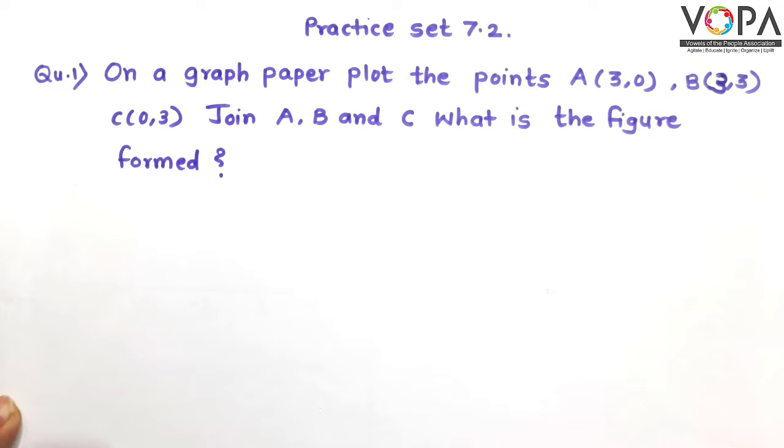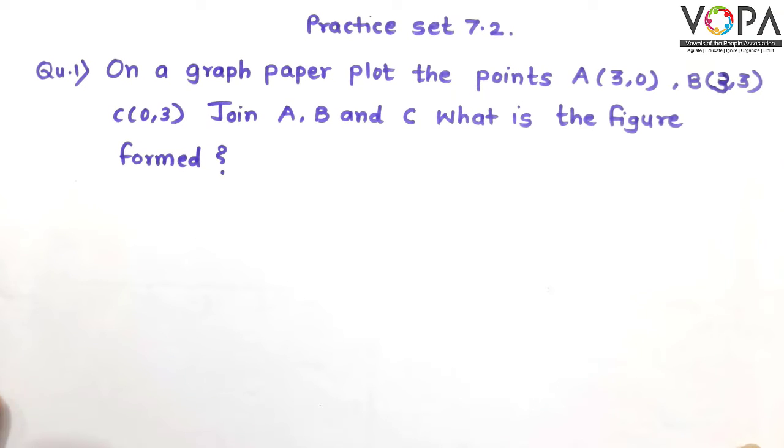plot the points A(3,0), B(3,3), C(0,3). Join the points A, B and C. What is the figure formed?